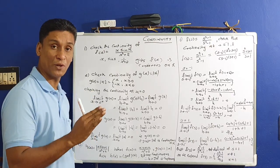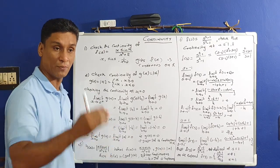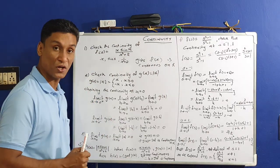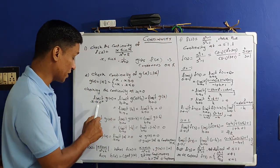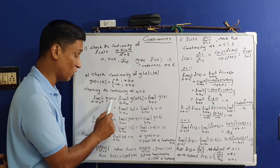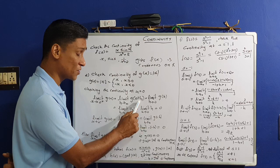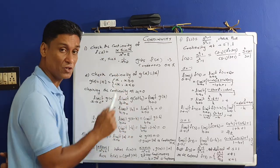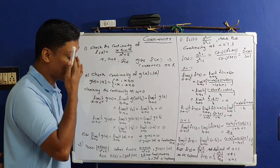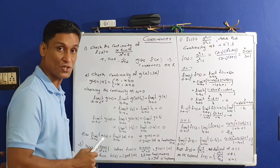Left limit and right limit and the functional value at 0 — if these are all the same, the function is continuous. First we find the right limit: limit as x→0⁺ of g(x) = limit as h→0 of g(0+h). By definition, limit x→A⁺ f(x) = limit h→0 f(A+h).